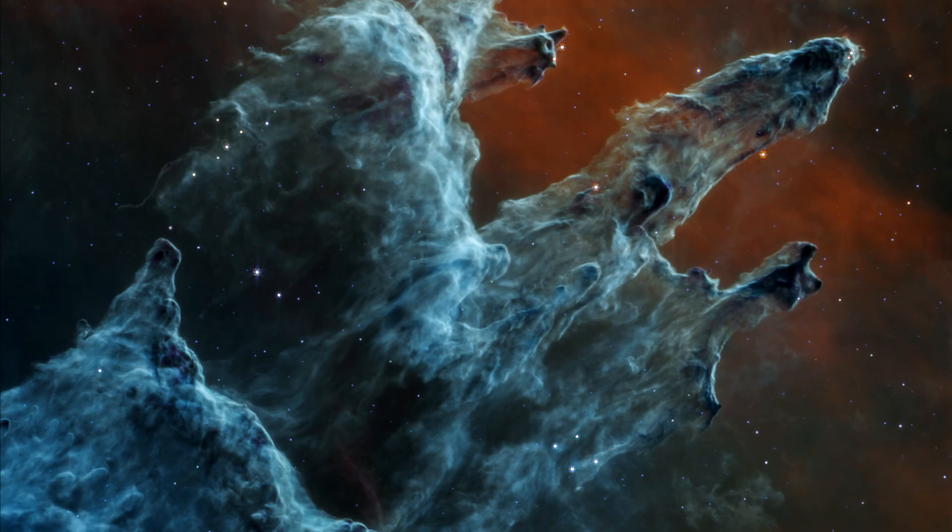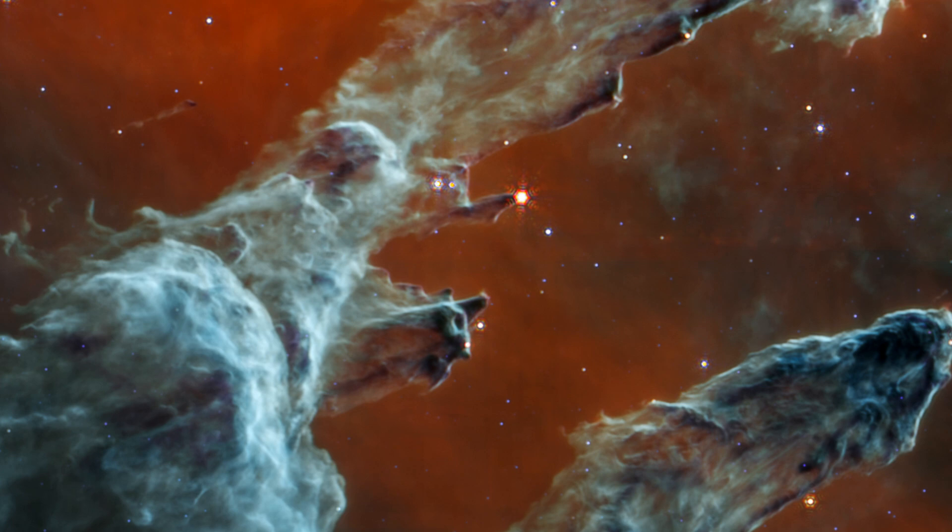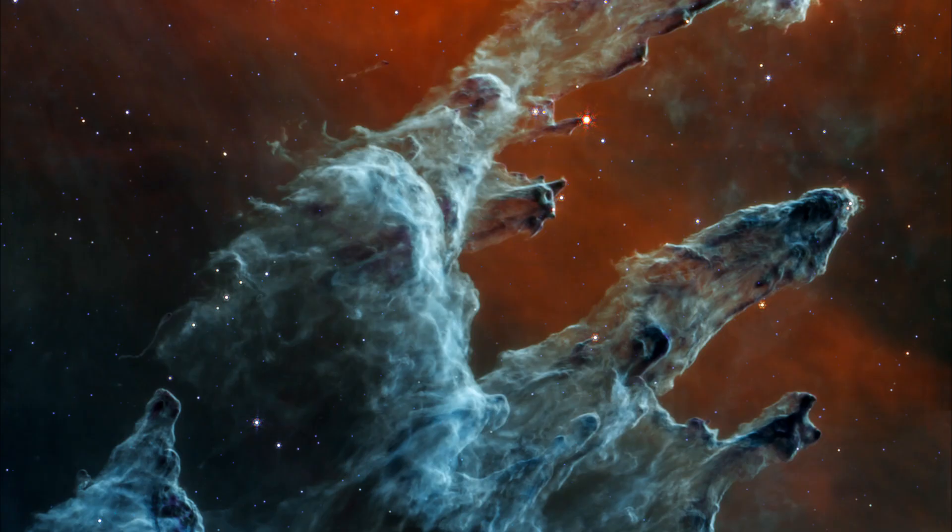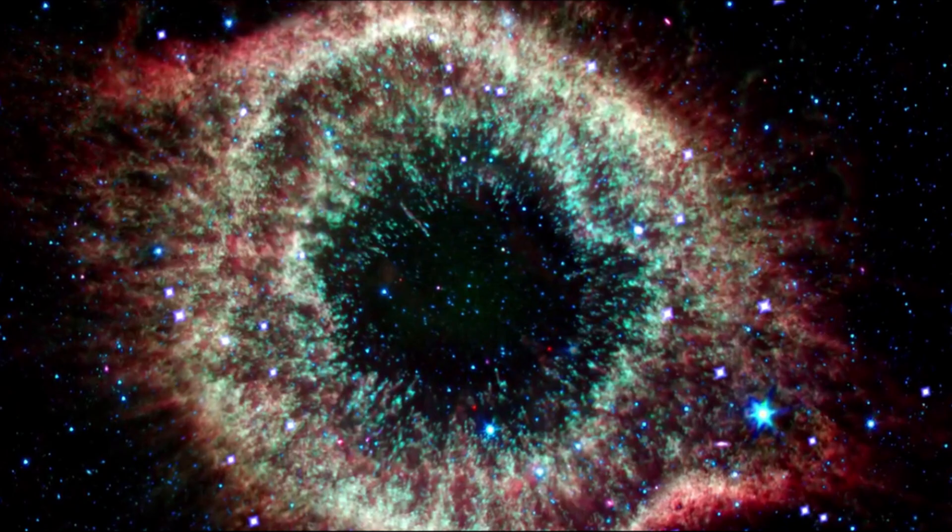Instead, MIRI observes young stars that have not yet cast off their dusty cloaks. These are the crimson orbs toward the fingers of the pillars. In contrast, the blue stars that dot the scene are aging, which means they have shed most of their layers of gas and dust. Mid-infrared light excels at observing gas and dust in extreme detail.